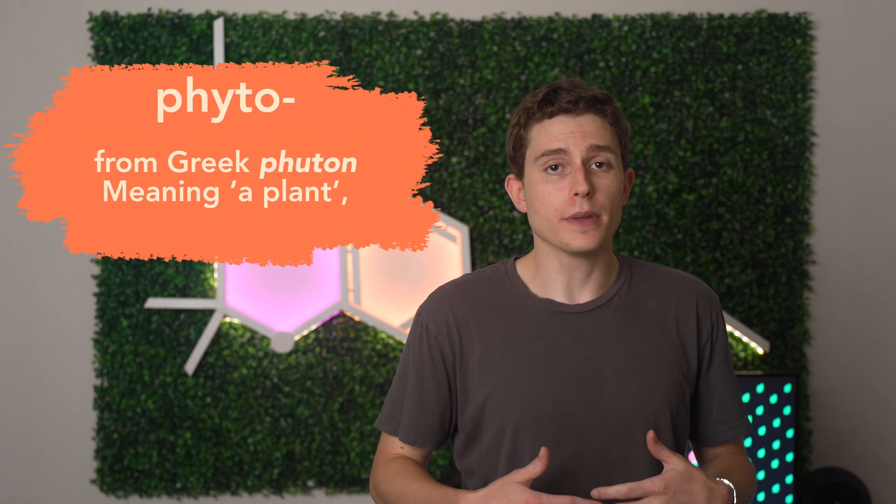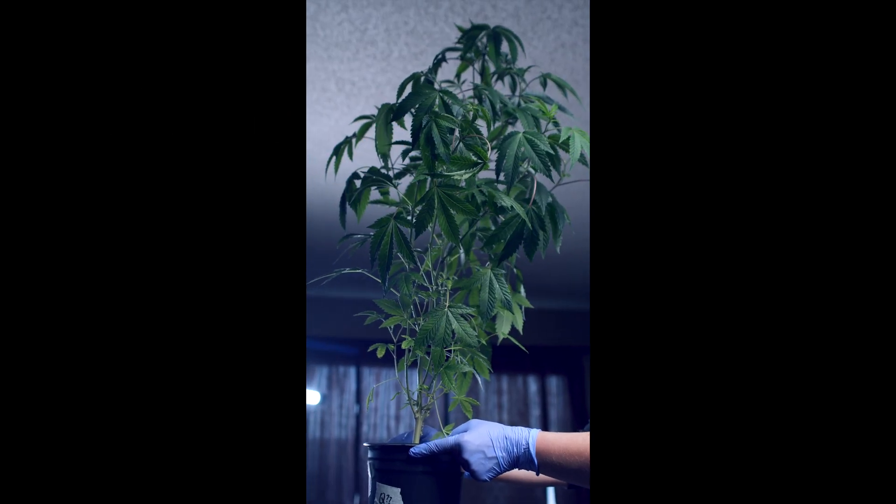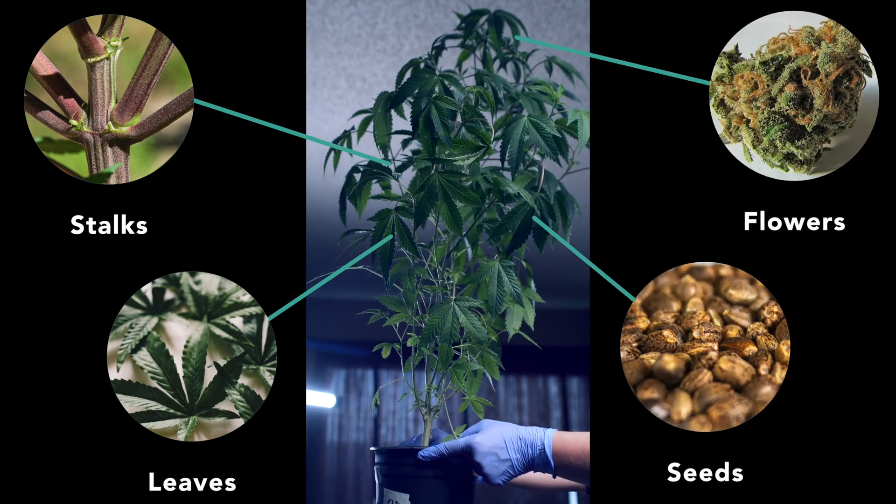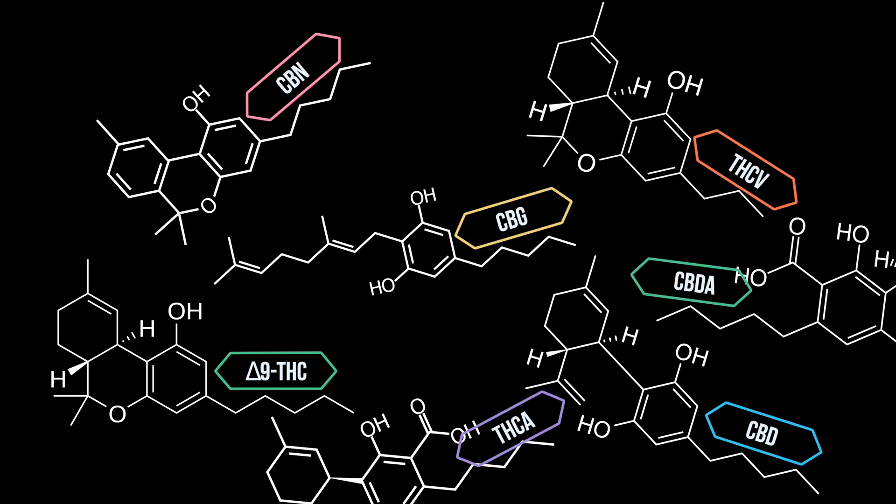Let's start with phytocannabinoids. Now phytocannabinoids, phyto meaning plant, are cannabinoids that are present in, you guessed it, plants. They can be found in the stalks, leaves, flowers, and seeds of the plant. This is basically everything we love about cannabis: THC, CBD, CBN, CBG, THCV, and the list goes on.